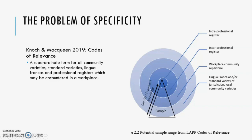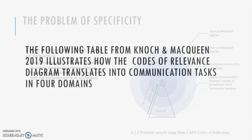Farther out, the interprofessional register is when doctors are talking to nurses or other professionals in the hospital. The workplace community repertoire, a little farther out, is one in which doctors are talking to non-medical people — for example, patients or cleaners or other people in the hospital. The outermost example, the lingua franca, is the non-professional specific language used in everyday conversation — what we refer to usually as general language ability.